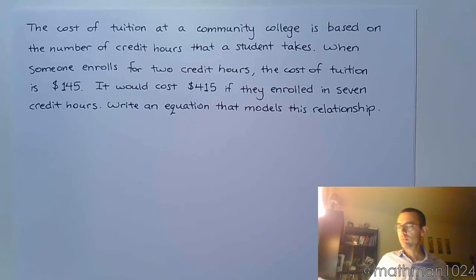So here's what we have. It says when someone enrolls for two credit hours, the cost is $145, but it's going to cost $415 if they enroll in seven credit hours. So we want to come up with a relationship with an equation that models what's going on here in this problem.